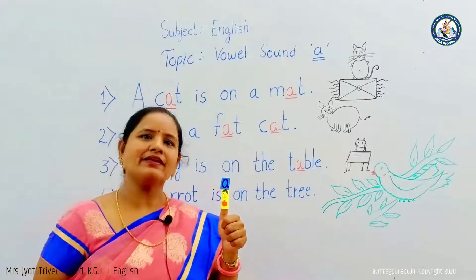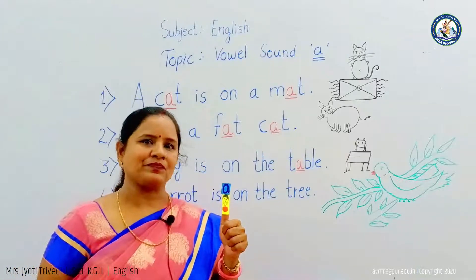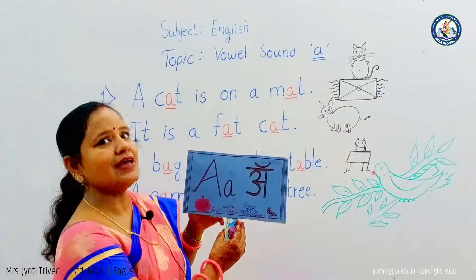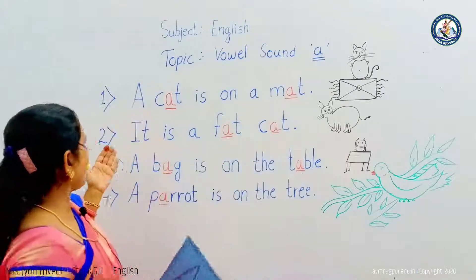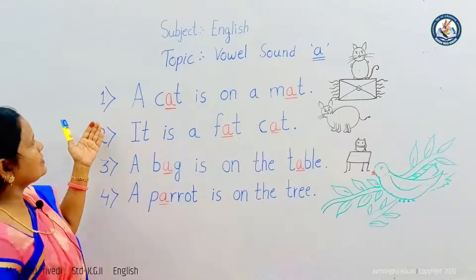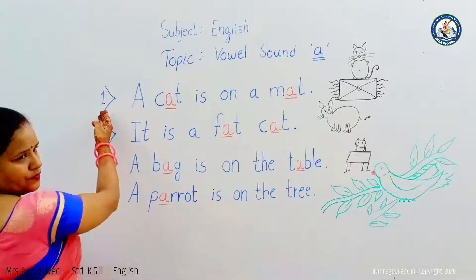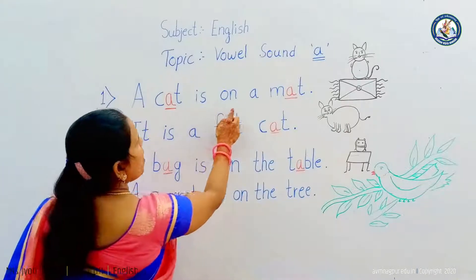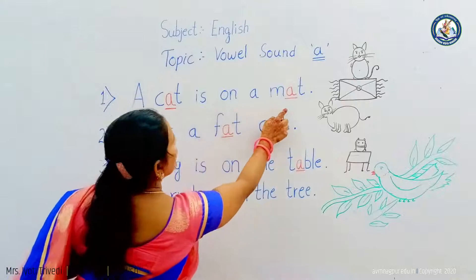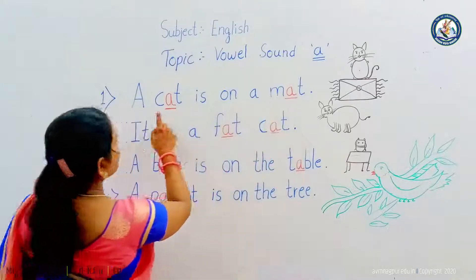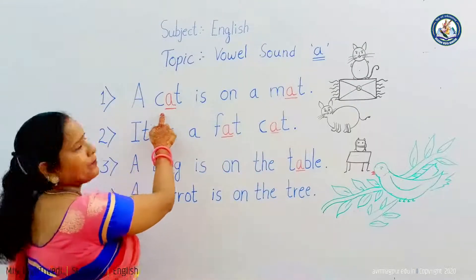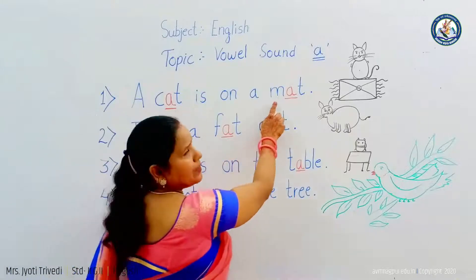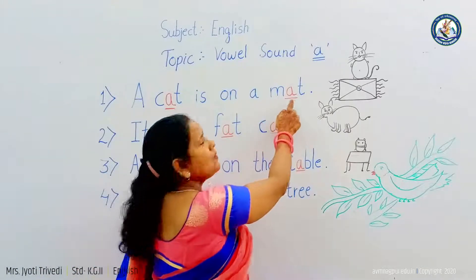The sound of vowel A is 'a'. See here — the sound of vowel A is 'a'. Here I have written some sentences. First: a cat is on a mat. Here the sound of A is 'a'. C-A-T: cat. M-A-T: mat.